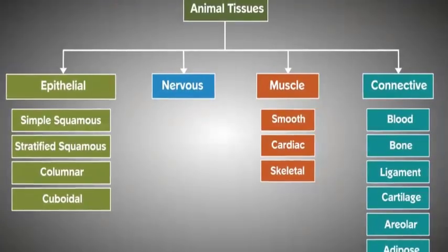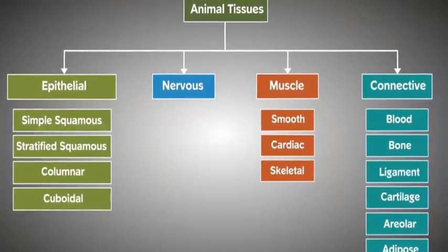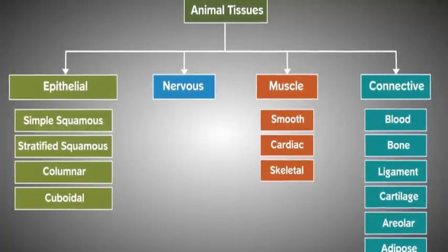In conclusion, we have seen and understood the types of animal tissues, their subclassifications, and their functions.